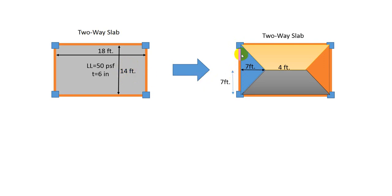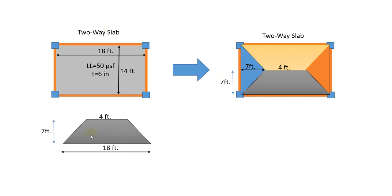Since the 45-degree lines meet at equal angles, the triangle on the shorter side has a base of 7 feet and a height of 7 feet. That means the full shorter width is 14 feet, and the remaining middle portion of the longer side is 4 feet. For the trapezoidal region, the height is 7 feet, the longer parallel side is 18 feet, and the shorter parallel side is 4 feet.